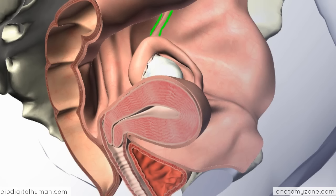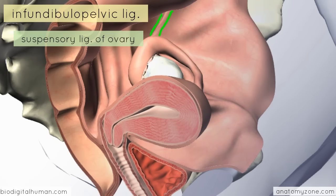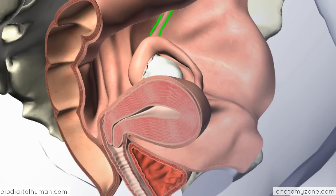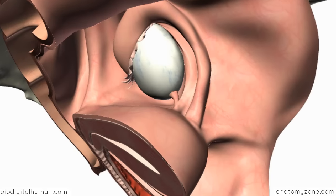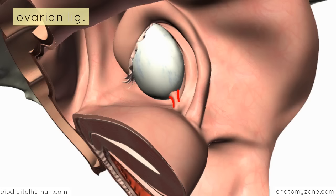This fold of peritoneum attaches to the superior pole of the ovary and is called the infundibulopelvic ligament, also known as the suspensory ligament of the ovary. This fold contains the ovarian vessels and lymphatics, which pass from the side wall of the pelvis into the superior pole of the ovary. Rotating to a superior view, you can see the attachment on the inferior pole of the ovary which connects it to the uterus — this is called the ovarian ligament. It is a fibromuscular band of tissue passing to the corner of the uterus, and upon attachment it continues anteriorly and laterally as the round ligament, outlined here in red.